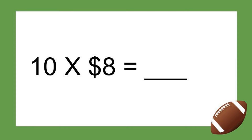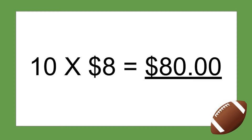This student wrote down the problem more accurately to show more information from the problem. 10 represents how many people were coming to the game; $8 represents how much each ticket costs. So what is 10 times 8? Figure it out and let's check our answers. 10 times 8 equals $80 — the tickets cost the family $80 to go watch the football game.